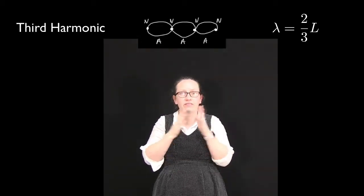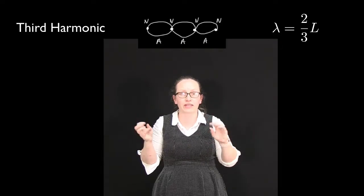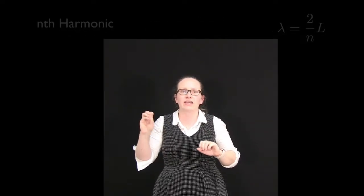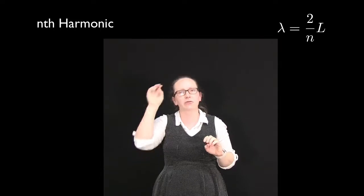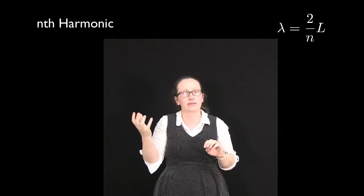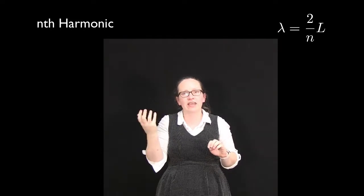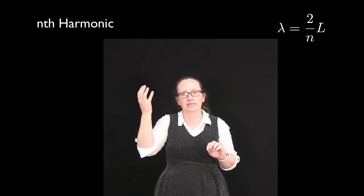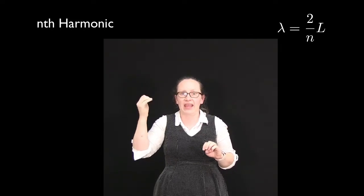In fact, we can think of any integer number of harmonics. The nth harmonic is where we've got n loops on our piece of string, so we've got n half-wavelengths along the piece of string. The wavelength of the nth harmonic is given by two times the length of the string divided by n.